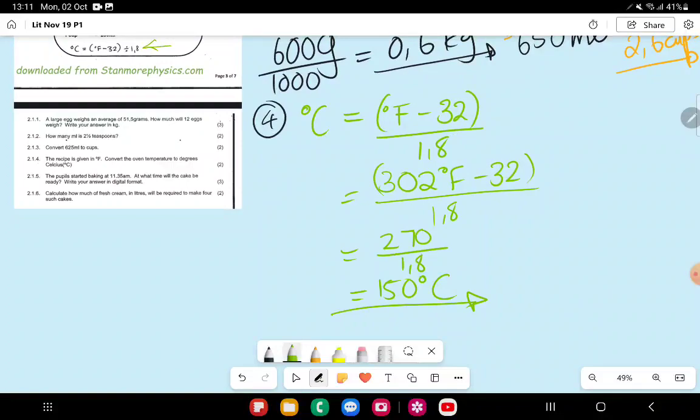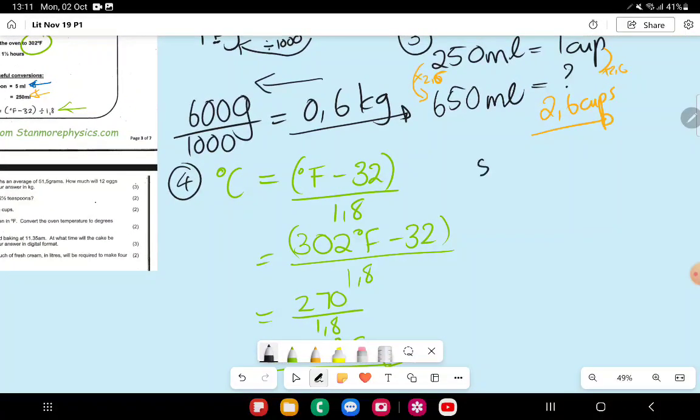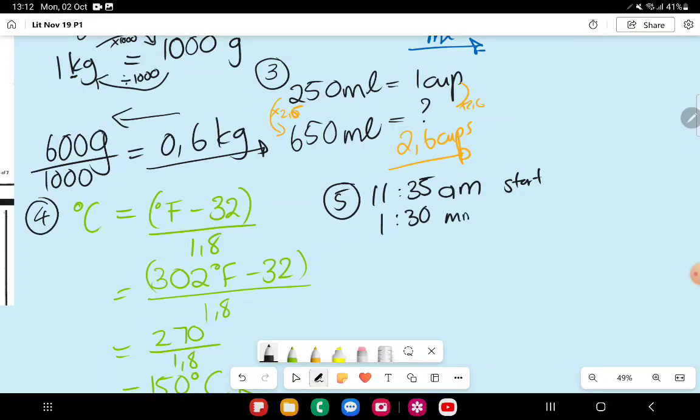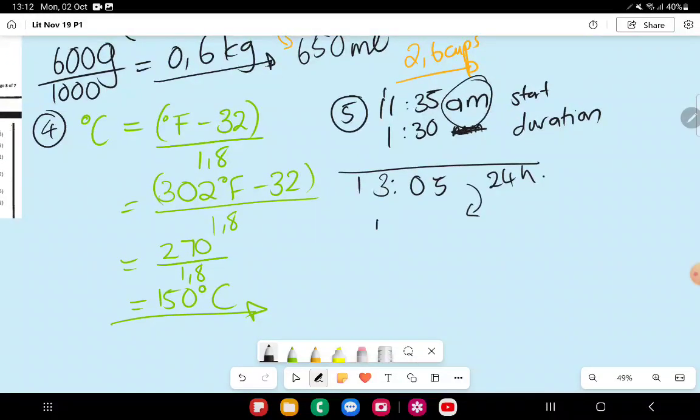Question five says they started baking at 11:35. At what time will the cake be ready? Write your answer in digital format. Question five: 11:35 AM is our start time. Our duration is one and a half hour, so one hour 30 minutes is our duration. So if we add those two up, I'm going to have 35 minutes and 30, and 30 and 30 is a whole hour. Remember, 30 and 30 is 60 minutes, which is one hour, so I carry over on 60 and not on 100. So that ends up being 300, so that ends up being 1, 1305, which is our 24 hour way of writing. But because they put AM there, I'm going to convert this to a PM writing. 1305 is the same as one o'clock and five minutes after that, PM. 1:05 PM.